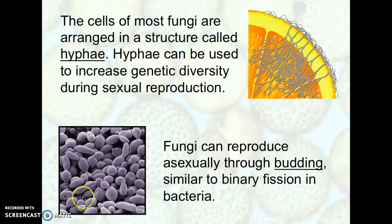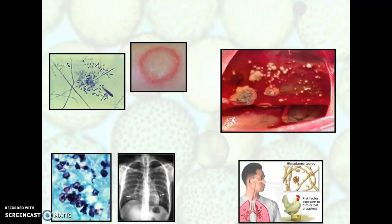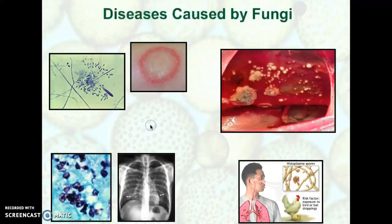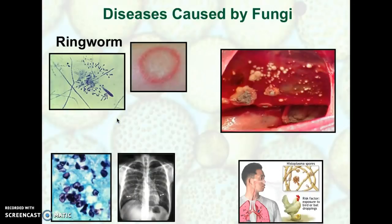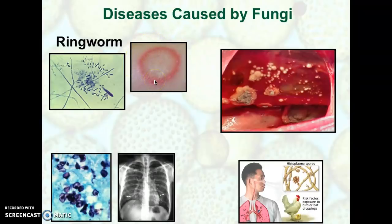Not all fungi cause diseases, just as not all bacteria or protists cause diseases. But here are a few fungal diseases. Ringworm is one you're probably familiar with — it's a fungus, not a worm. It causes a red ring on your skin that is itchy and scaly with a white center.